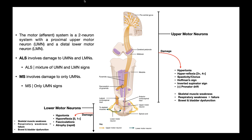ALS is a disease of the motor part of the nervous system. The motor or efferent system is what we call a two-neuron system. Originating in the brain, we have an upper motor neuron — shown in yellow — going all the way down the brainstem into the spinal cord. In green, we have lower motor neurons that go directly to skeletal muscle. ALS involves damage to both upper and lower motor neurons, which is different from multiple sclerosis, which involves damage only to upper motor neurons.